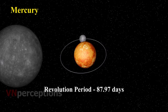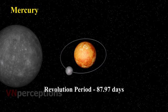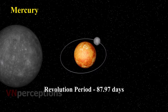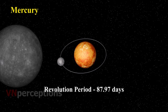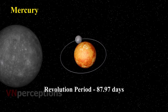However, it can be observed just before sunrise or just after sunset near the horizon. So it is visible only at places where trees or buildings do not obstruct the view of the horizon. Mercury has no satellite of its own.